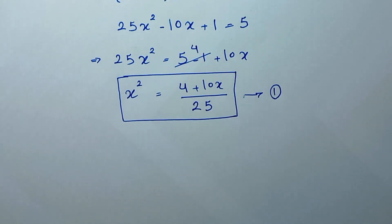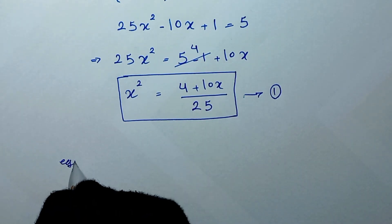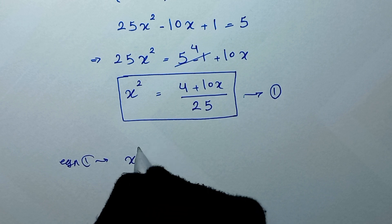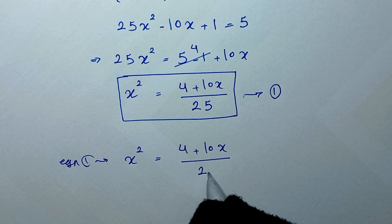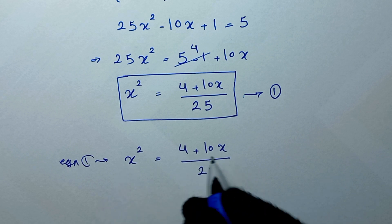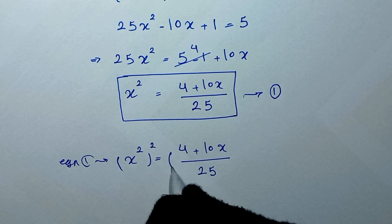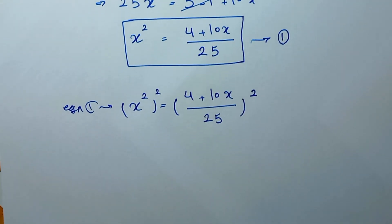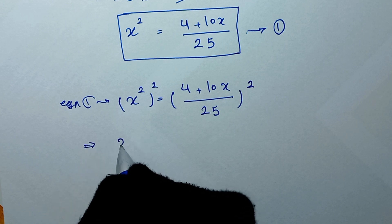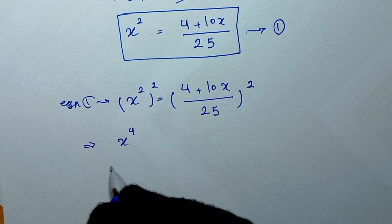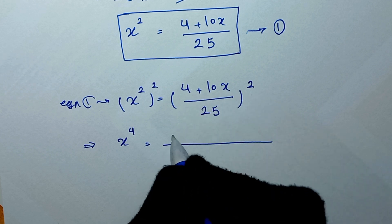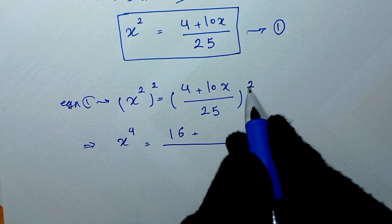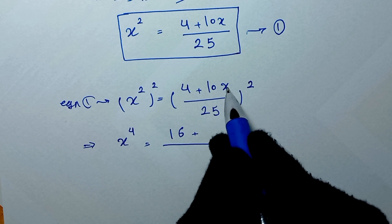From equation 1, we have x squared equals 4 plus 10x over 25. We square both sides of this equation — squaring both the left and right sides — so it will be x to the power of 4. On the right side, (4 plus 10x) squared gives 16 plus 2 times 4 times 10x, which is 80x, and 10x squared gives 100x squared.